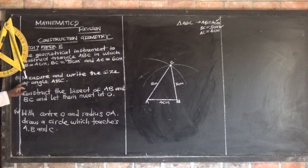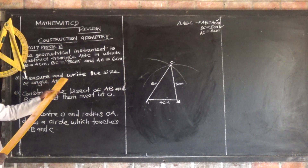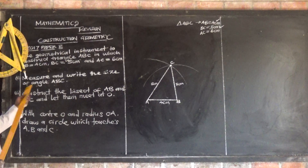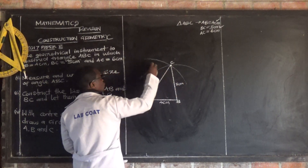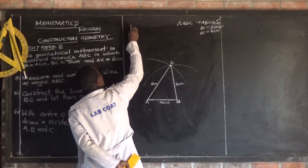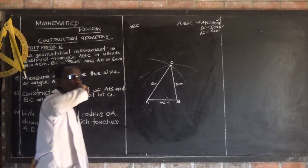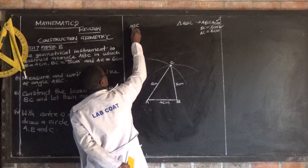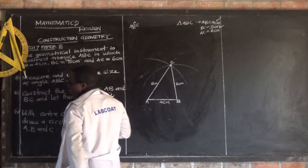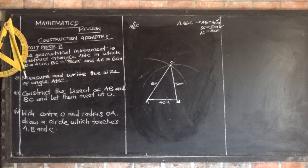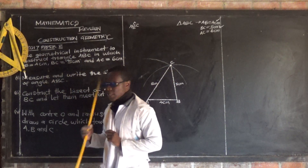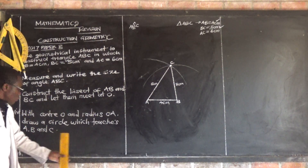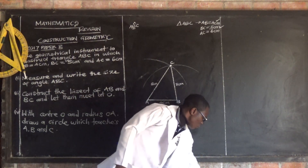Now let's look at part two, which says: measure and write the size of angle ABC. So they want us to measure angle ABC. When they say angle ABC, look at the letter in the middle — that's B. So we need to measure angle B. For measuring angles, we're supposed to employ our protractor.